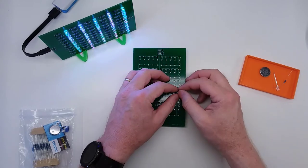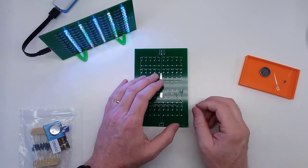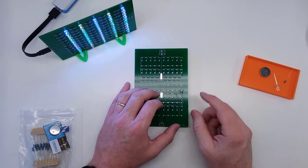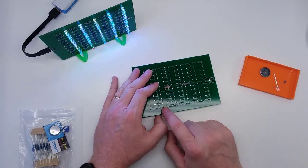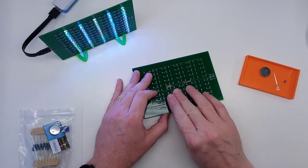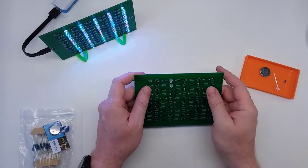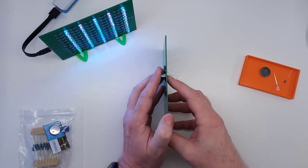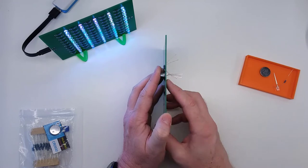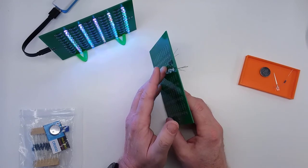Once you flip these over you can give these just a little bit of a splay so that they don't move and go ahead and give them a solder. One thing that I do, and this is completely up to you, is I'll solder just one side of each of the resistors and the LEDs and then I'll flip it over and make sure they're laying flat. If they're not flat you can take your finger and hold the LED or the resistor on one side and then heat that one leg up and adjust it accordingly.